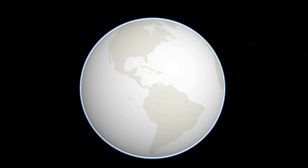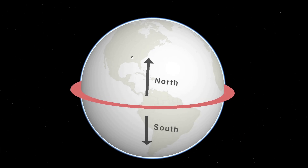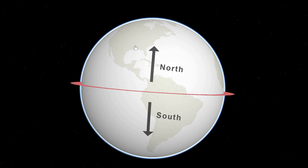Latitude, a geographic coordinate specifying any north-south position on Earth. It is an angle measured above or below the plane perpendicular to Earth's rotational axis that divides Earth evenly into northern and southern hemispheres.